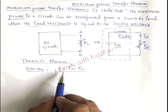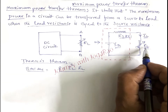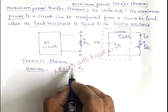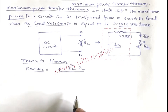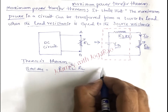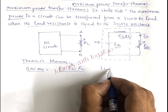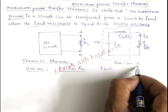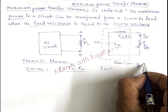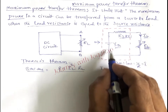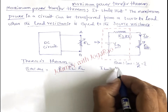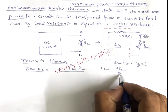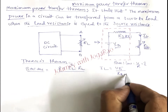We have the simple formula: P = I² × R. So load resistance is RL and load current is IL, giving power P = IL² × RL. IL is calculated using Ohm's law: IL = V / R. So IL = V_Thevenin / (R_Thevenin + RL).